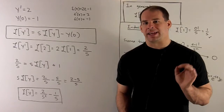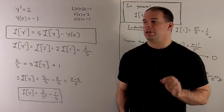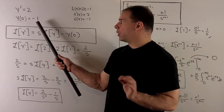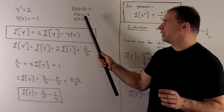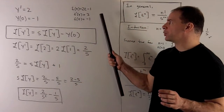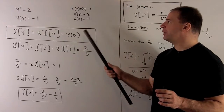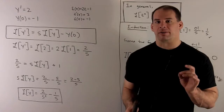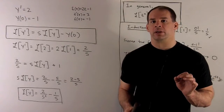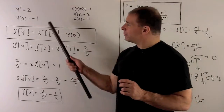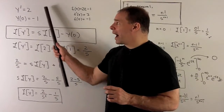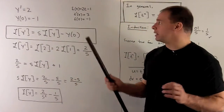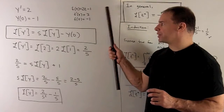Now let's check our answer against the initial value problem. We had y prime equals 2 and y of 0 equals minus 1. Note that if f of t equals 2t minus 1, then f prime equals 2 and f of 0 equals minus 1, so f is the unique solution of the IVP. If we find the Laplace transform of y using this data, we should get the same answer as the Laplace transform of 2t minus 1.